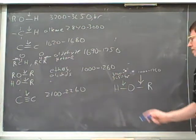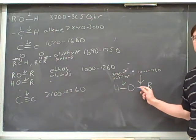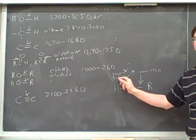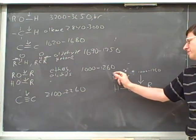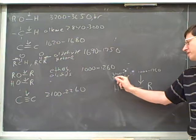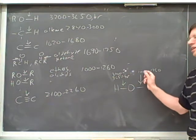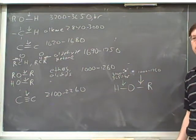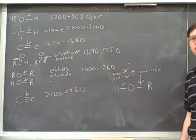In an alcohol, there are two types of bonds that can give you absorptions. The OH bond gives you this type of absorption that we already used in the last problem — broad, in the 3200 to 3600 range — and the oxygen-carbon bond gives you an absorption in this region. So if we had an alcohol, we would expect to see both of these absorptions.